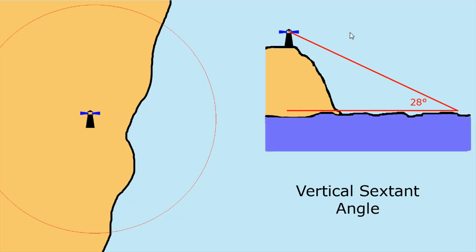Another curved position line is created from the vertical sextant angle. Again the sextant is used for measuring angles, and in this case we're measuring the angle of the height of this lighthouse — the angle to the shore — in this case 28 degrees. From the height and the angle we can determine the distance that you are from that lighthouse. Knowing that distance, you can draw an arc of all the places that have that same distance, and you can say that you are somewhere on that arc.